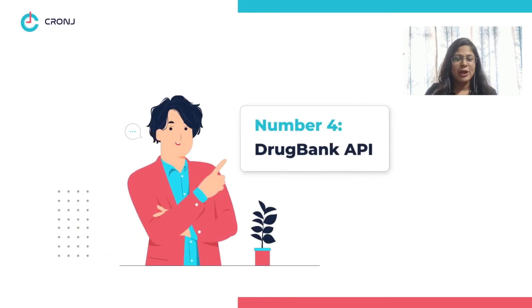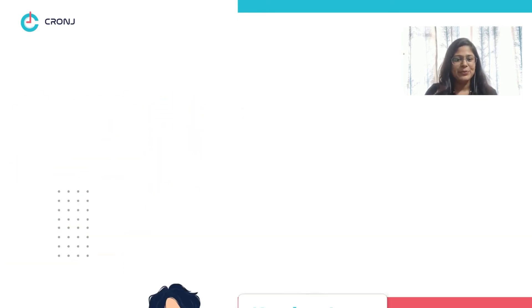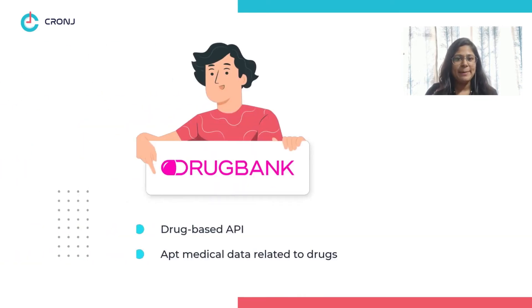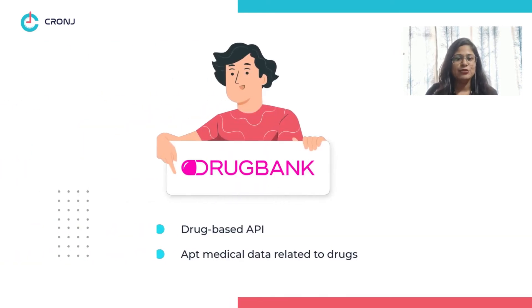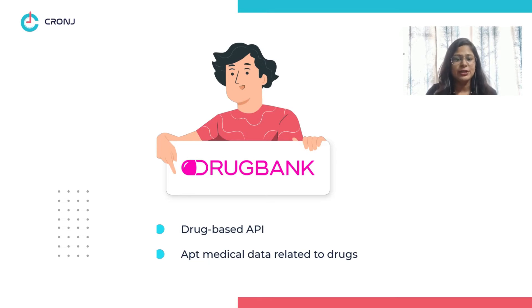Number four: Drug Bank API. Drug Bank API is a drug-based API that shares medical data related to the medical structure, metabolism, and pharmacology of drugs, which can prove essential for researchers.